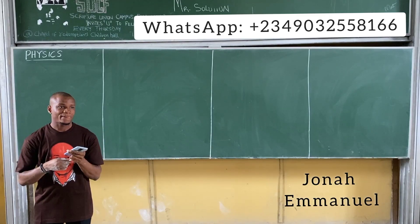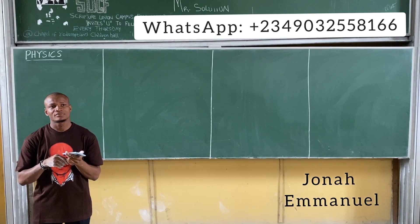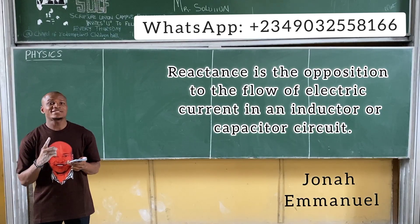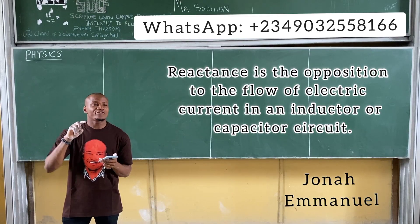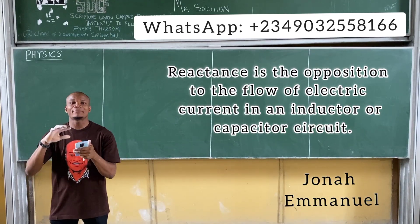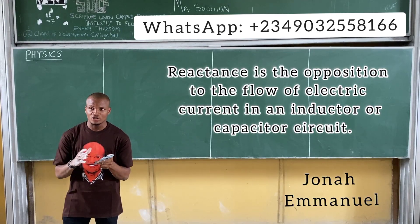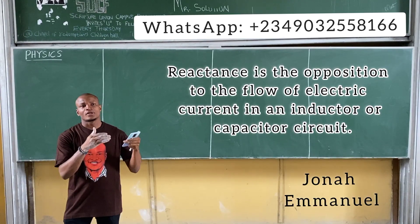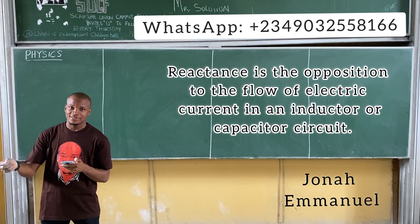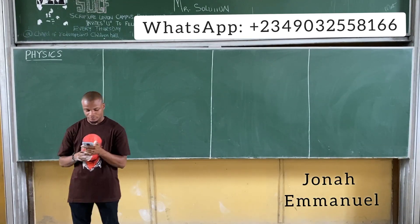Define reactance. Reactance can be defined as the opposition to the flow of current. It didn't say define inductor reactance. We mention reactance for two things: inductor circuit only and capacitor circuit only. When it comes to the mixture, we call it impedance. So reactance is simply the opposition to the flow of current in an inductor or capacitor circuit only.